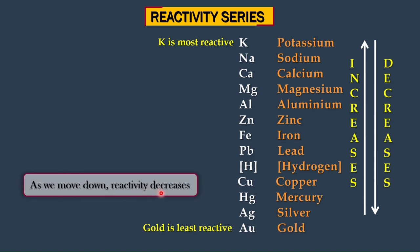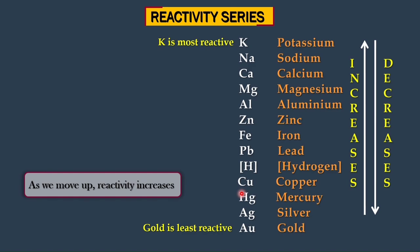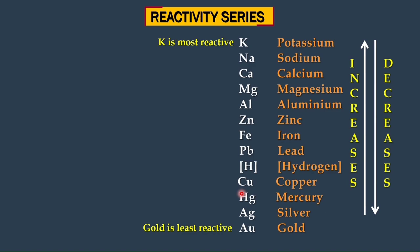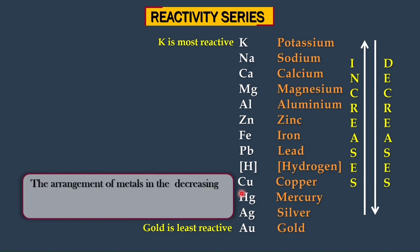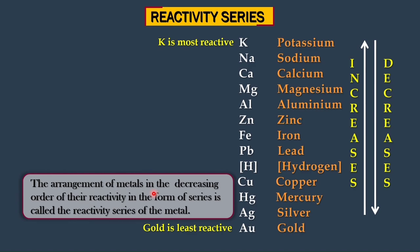As you move down the reactivity series, reactivity decreases, and as you move up, reactivity increases. In exams, a two-mark question on the definition of the reactivity series may appear. The proper definition is: the arrangement of metals in the decreasing order of their reactivity in the form of a series is called the reactivity series of metals.